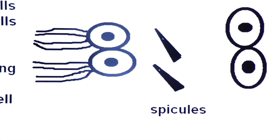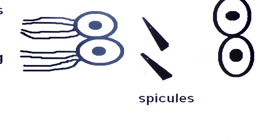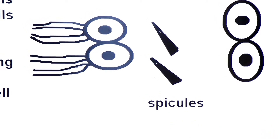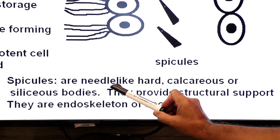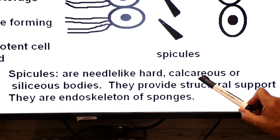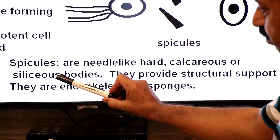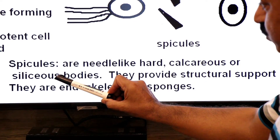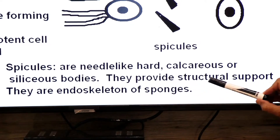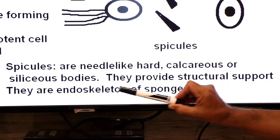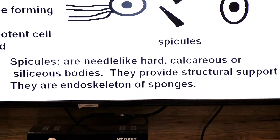Spicules are hard needle-like structures visible in the diagram. They are the endoskeleton of sponges. Spicules may be calcareous — made up of calcium carbonate — or siliceous — made up of silica. They provide structural support to the body of the sponge.